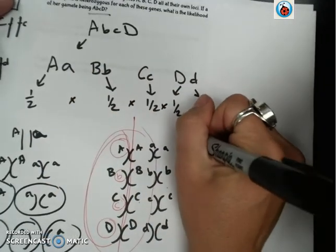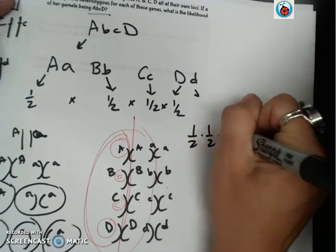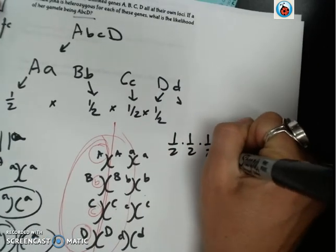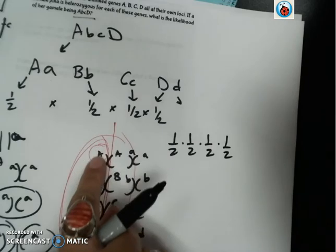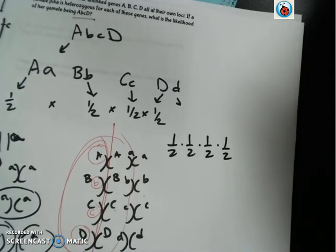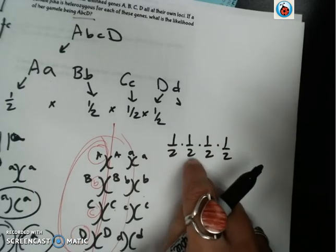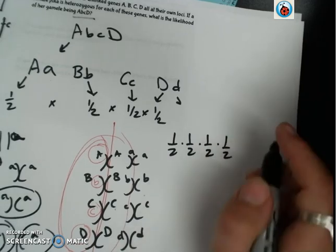So we do, there is a one half, times one half, times one half, times one half chance that all of these will end up in the same gamete together. So two times two is four, times two is eight, times two is sixteen.